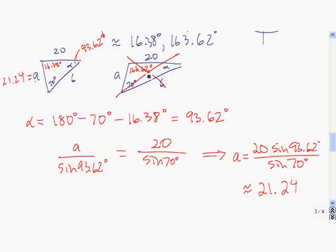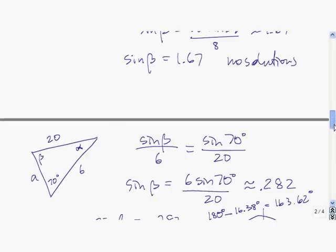Note that if 163.62 degrees actually were to work, we would continue to find alpha and a in this triangle the same way that we found alpha and a in this triangle. And then we would have two different triangles that solved the original problem. That means that they had the specified values of having this angle of 70, a side of 6, and a side of 20. Thanks for having me.